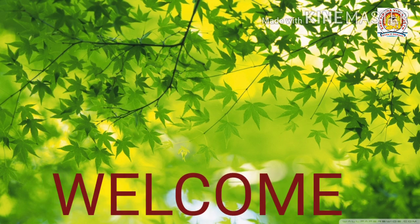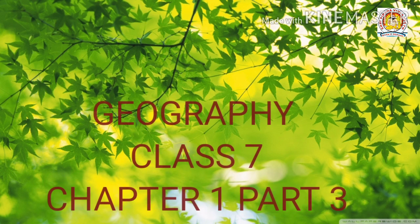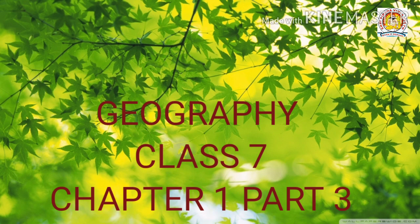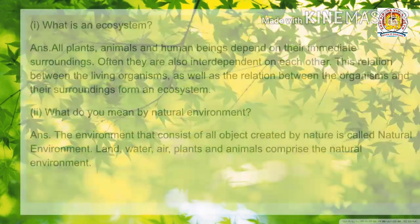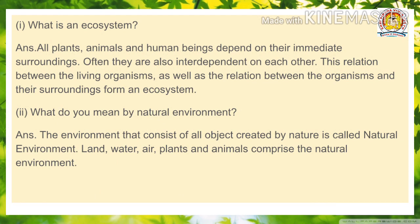Welcome students, this is your Geography class for Class 7. Today we will discuss the question and answer of Chapter 1. Question number one: What is an ecosystem? Answer: All plants, animals and human beings depend on their immediate surroundings.